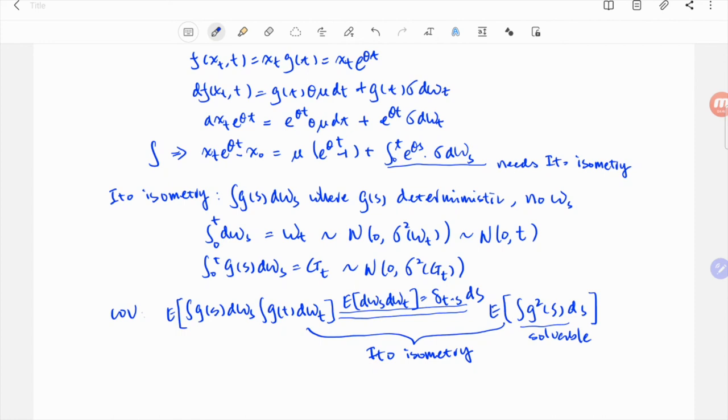And this property, being able to turn dw_t, dw_s to ds, is called Itô isometry.